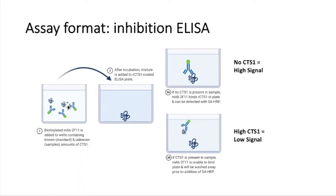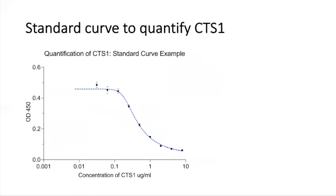This would produce low signal and indicate infection with valley fever. If no protein is present, the antibody will bind in the plate and produce high signal. This produces a standard curve where we can map concentration of CTS1 to an optical density value and back-calculate if we found CTS1 in human serum.